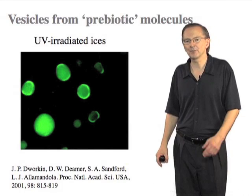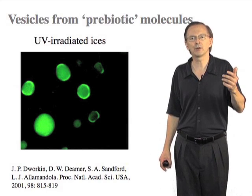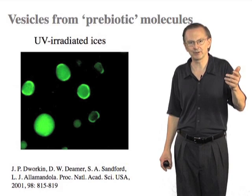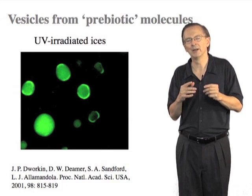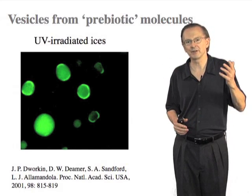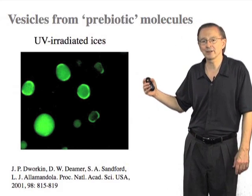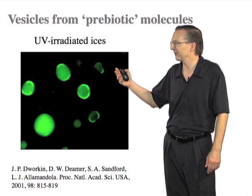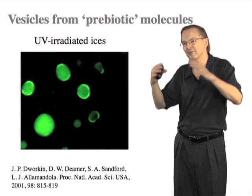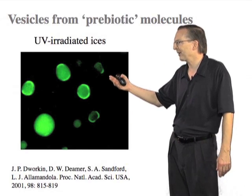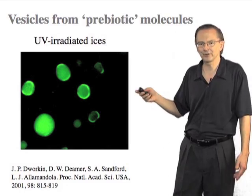Here's another example. This is an experiment done to mimic processes going on in interstellar molecular clouds, where various gases have condensed on the surface of silica particles and are subjected to irradiation by ultraviolet light and ionizing radiation. If you make ices like that in the laboratory and subject them to ultraviolet radiation, you get a lot of complicated chemistry. And in that vast mix of products, you can extract molecules which will again form membranes and self-assemble into vesicle compartments.